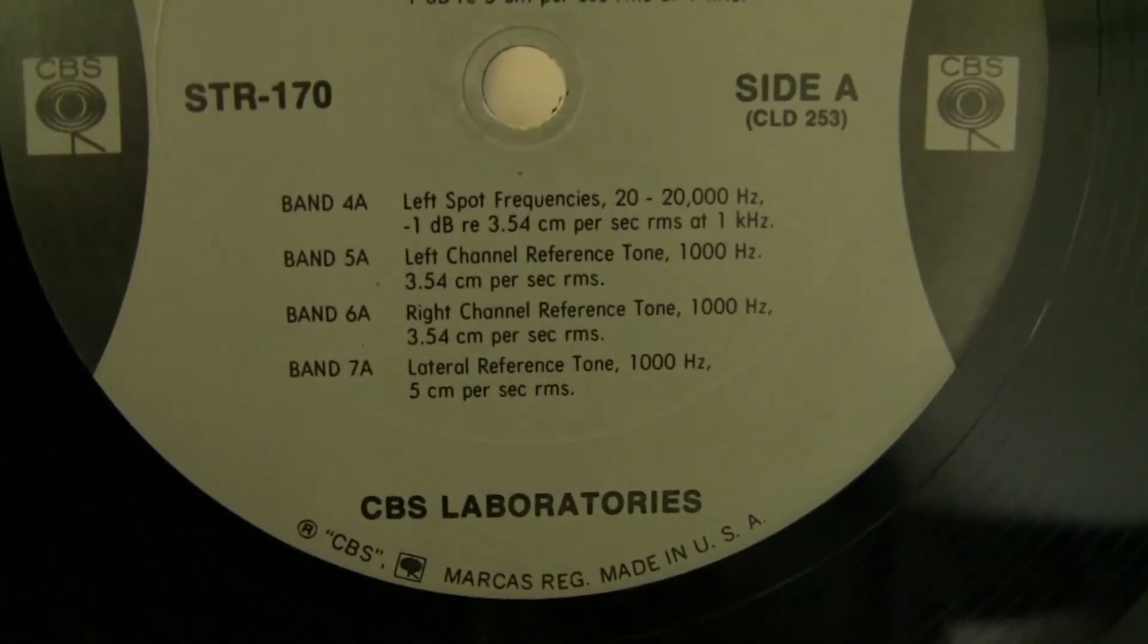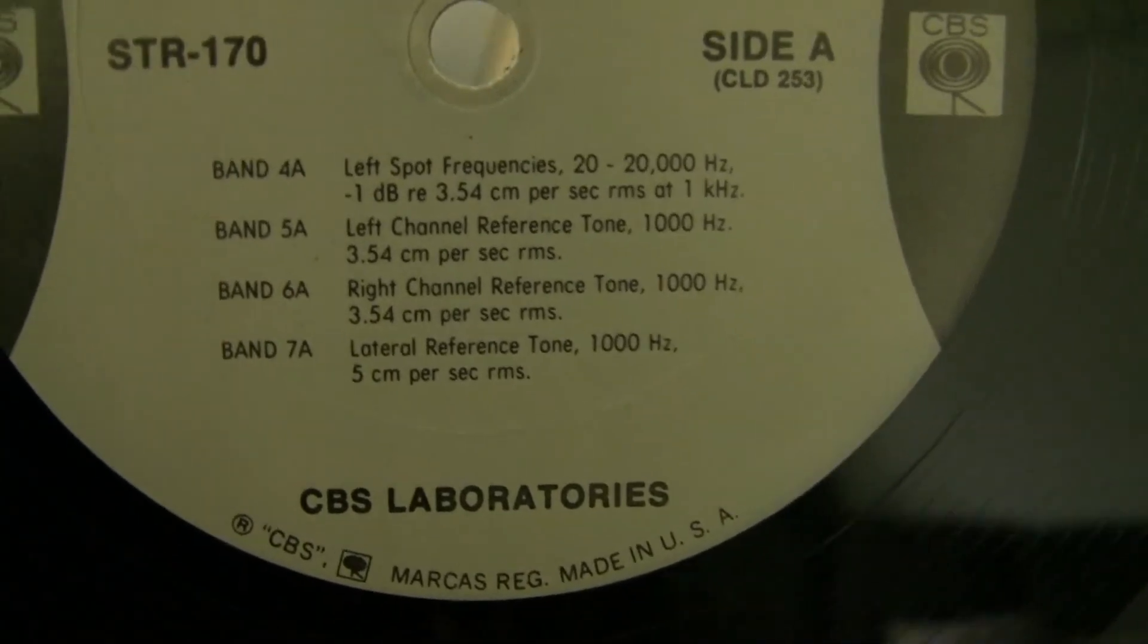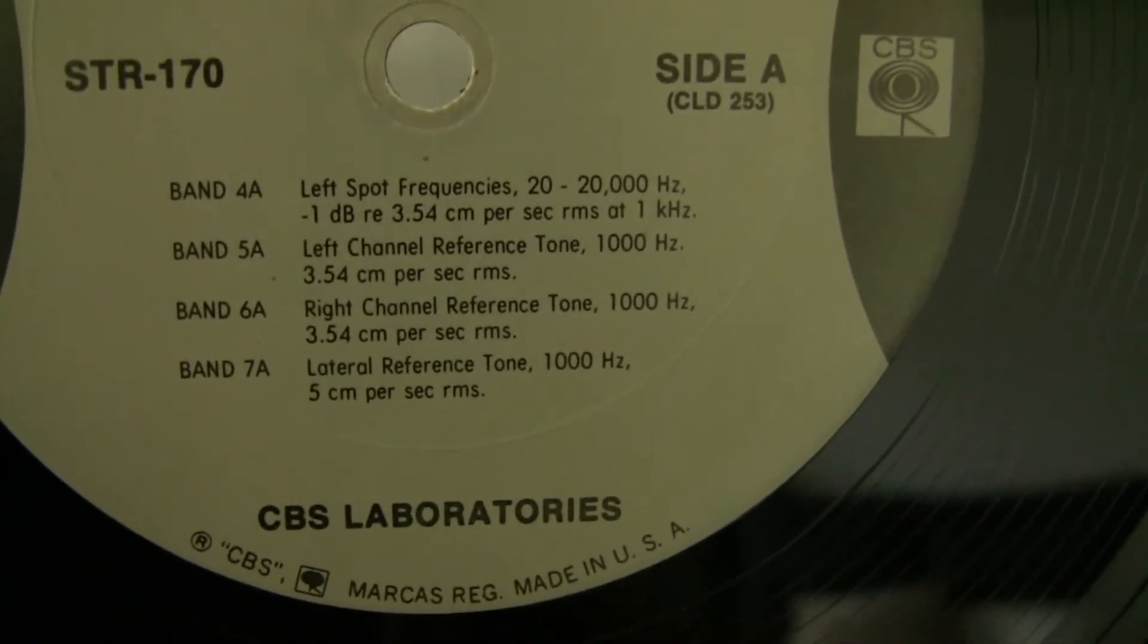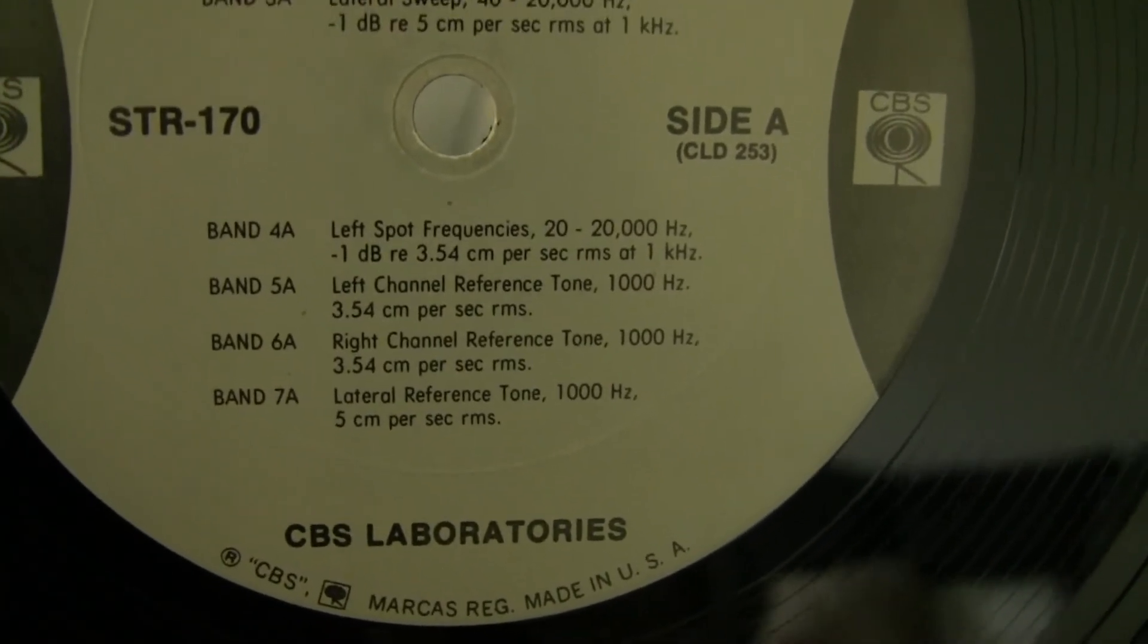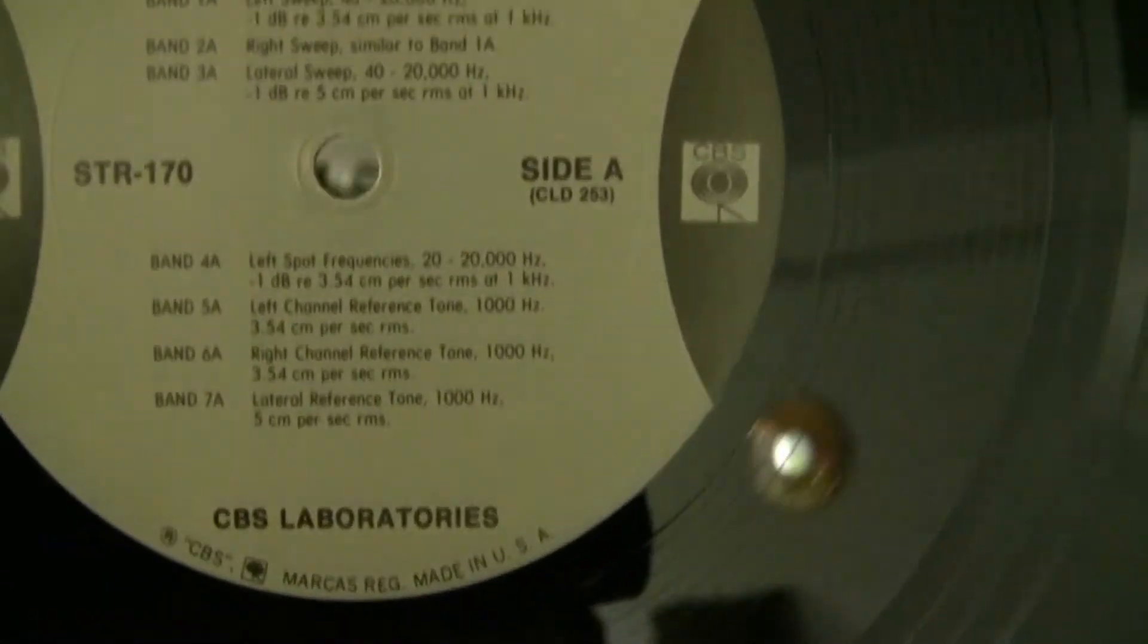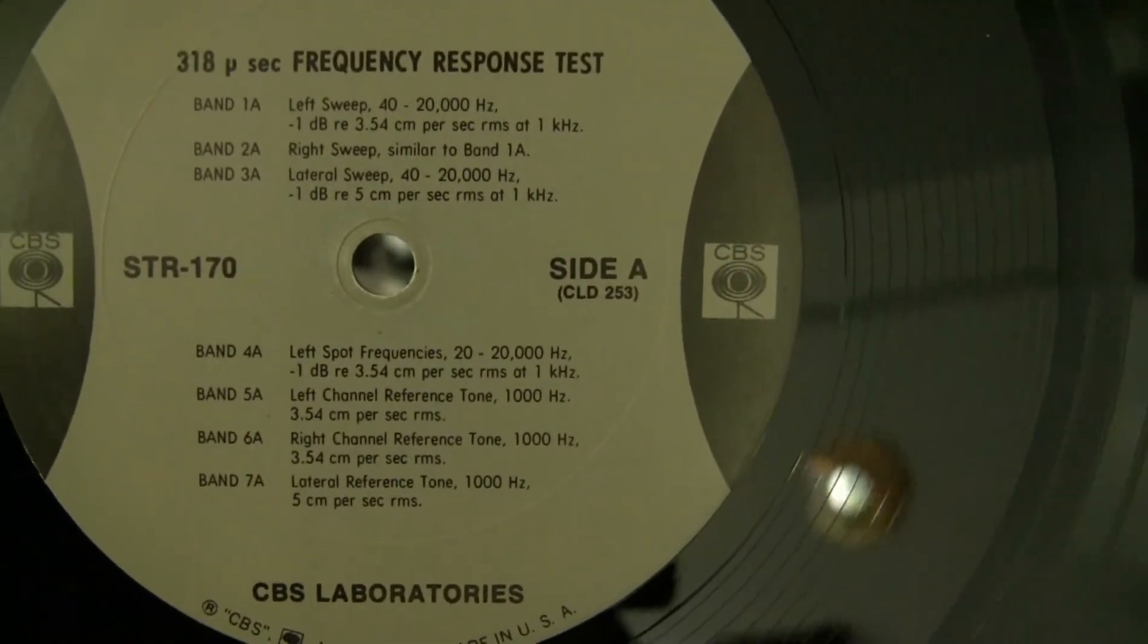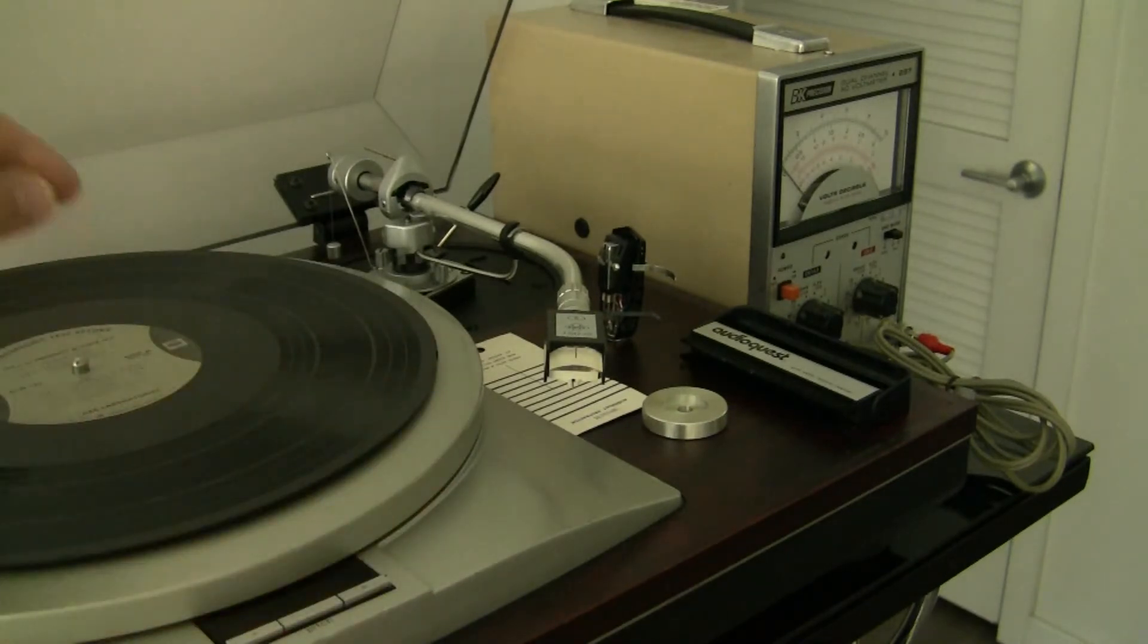The band 7a, the lateral reference tone at one kilohertz, is a good example. The innermost track of this record has two stereo channels with the same amplitude.